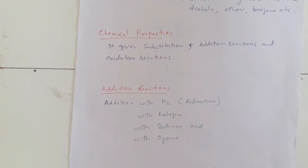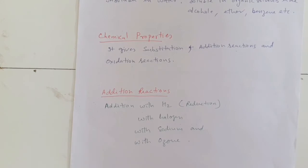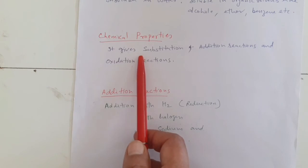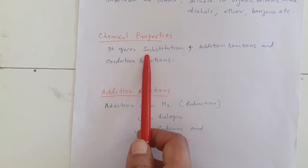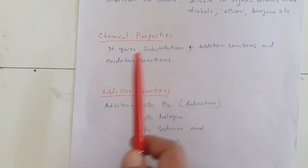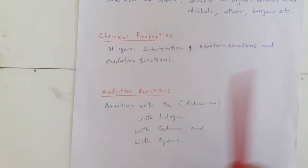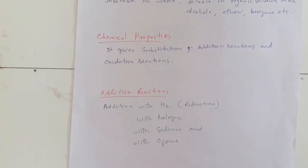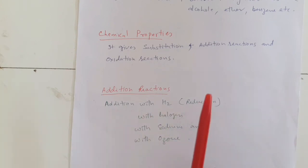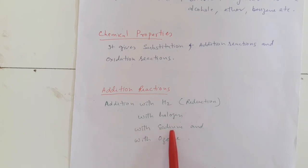About the chemical properties of naphthalene: we know it is an aromatic compound, so it undergoes electrophilic substitution reactions. With this, it gives some addition reactions and some oxidation reactions also. The addition reactions of naphthalene include: reaction with hydrogen (that is, reduction of naphthalene), reaction with halogen, reaction with sodium, and reaction with ozone.